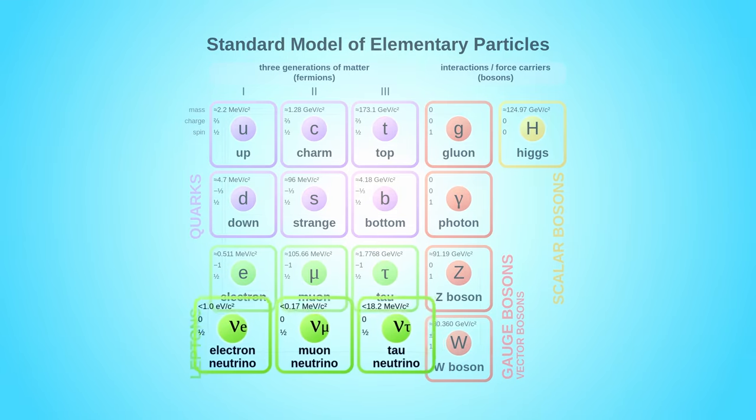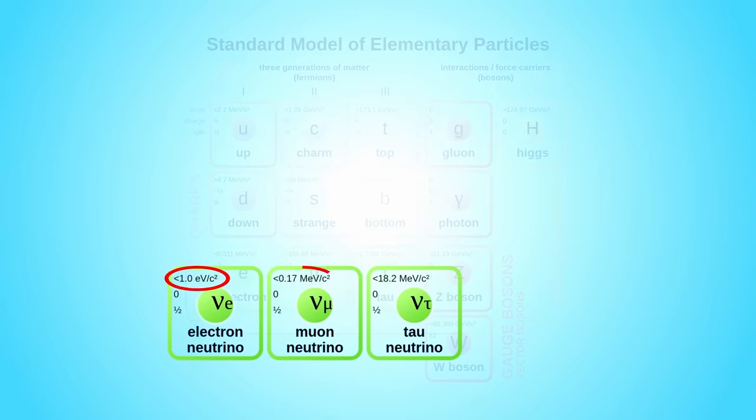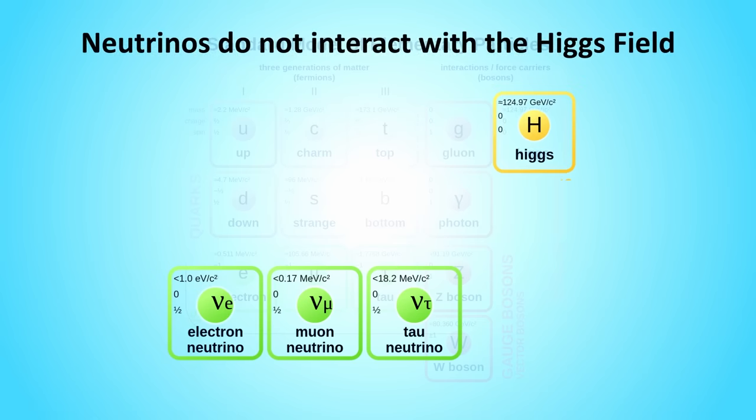The lightest particles we know of are neutrinos, and at one time we actually thought they were massless too, because we don't have a good theory to explain why they should have a mass, or how they gain that mass. According to the standard model, they don't interact with the Higgs field, so they should not have a rest mass, but experiments seem to show that they are slightly massive.